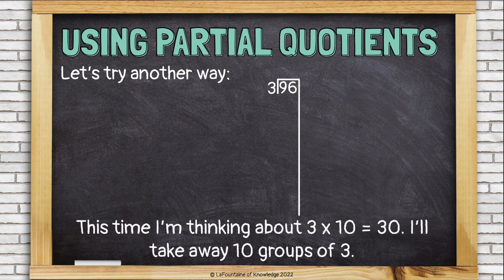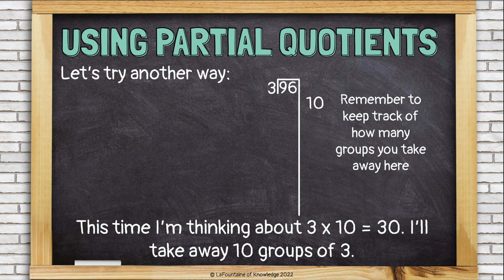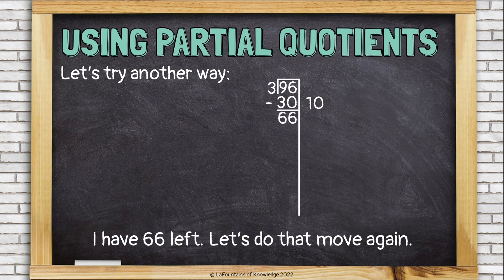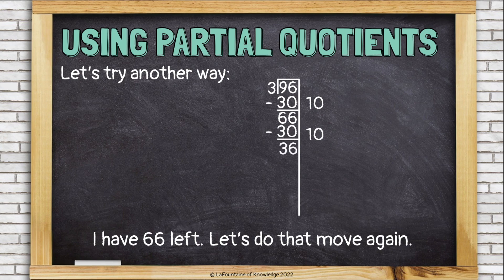This time, I'm thinking about 3 times 10 equals 30. That's a fact that I know off the top of my head. I'm going to take away 10 groups of 3, and remember to keep track of how many groups you take away here on the right. Okay, 10 times 3 is 30. 10 groups of 3 is 30, so I get to subtract 30. I have 66 left. Let's do that move again. I'll take away another 10 groups of 3, which is 30. Now I have 36 left.